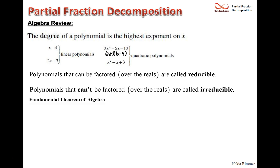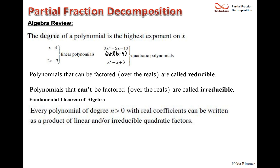The fundamental theorem of algebra says that no matter what degree your polynomial is, as long as the degree is more than zero and you have all real coefficients, you can write it as a product of linear factors and/or irreducible quadratic factors. Every polynomial of degree n ≥ 1 with real coefficients can be factored into linear or irreducible quadratic factors, and linears might appear more than once.